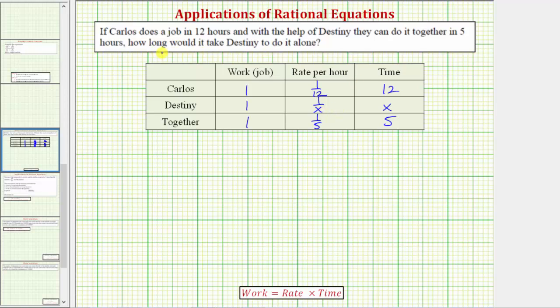So again the question asks us to determine how long it takes Destiny to complete the job alone. So our goal here is to determine the value of x, and to do this we'll form an equation using the rates. When two people work together to complete a job, we add or combine their individual rates to determine the rate at which they work together. Which means the equation we need to solve for x would be one-twelfth plus one over x must equal one-fifth. Again because together the rate at which Carlos and Destiny work is one-fifth of the job per hour, then if we add their individual rates, it must equal the combined rate of one-fifth.